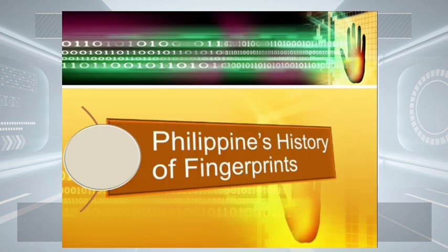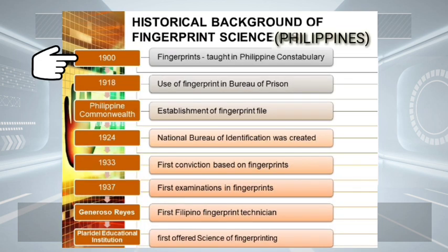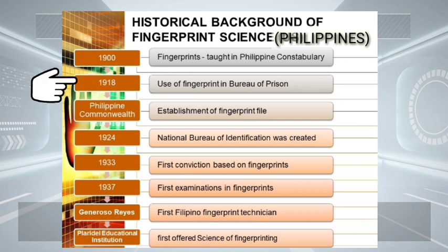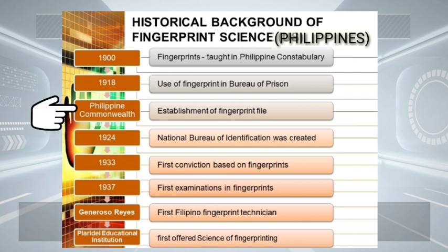In the history of fingerprint science in the Philippines, sometime in the year 1900, Mr. Jones was the one to teach fingerprints in the Philippines with the Philippine Constabulary. In 1918, the records of the Bureau of Prison show that carpetas, which contain the commitment and conviction records, already bore fingerprints. During the Philippine Commonwealth government, a modern and complete fingerprint file was established under the management of Lieutenant Asa Darby.